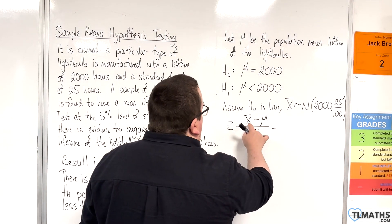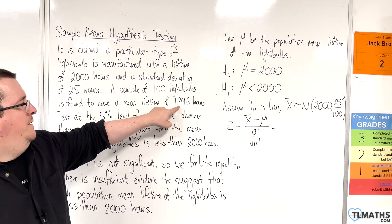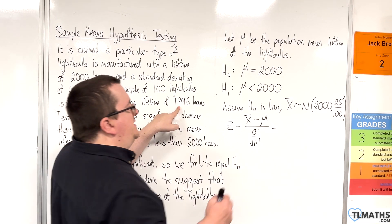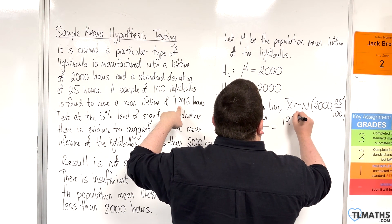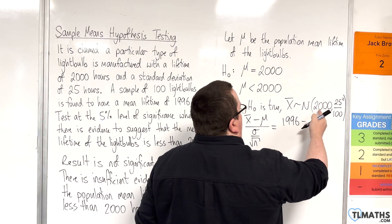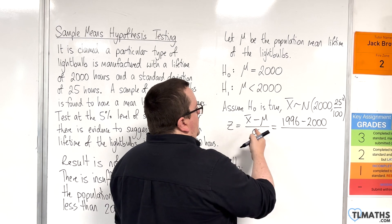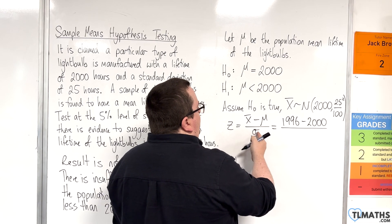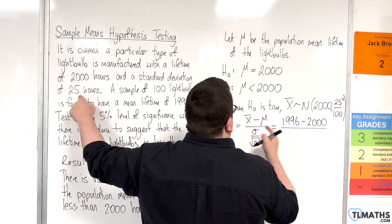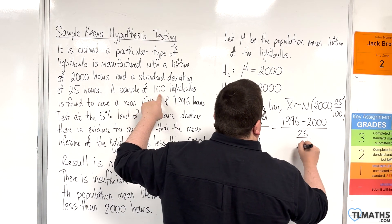So, what is x-bar? Well, x-bar is the sample mean, so 1,996, that we want to test. The mean is 2,000, so that's your population mean. Sigma is the standard deviation, which is 25. And the sample size was 100, so we've got the square root of 100.